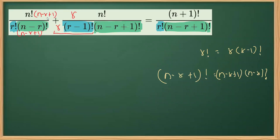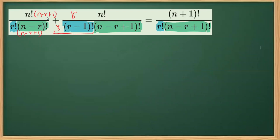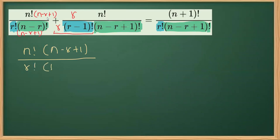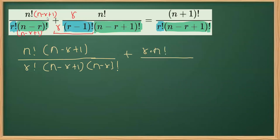So if we do this, we'll get this LHS equal to RHS. What I'm doing here is writing this as N factorial into — I multiply and divide by (N minus R plus one). This is R factorial on the LHS. We are doing the LHS and this is (N minus R plus one) multiplied by (N minus R) whole factorial. Plus there's R into N factorial over R into (R minus one) whole factorial.